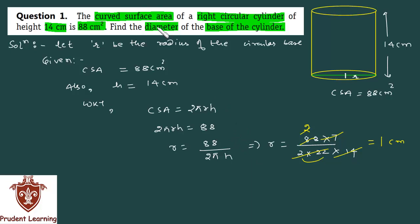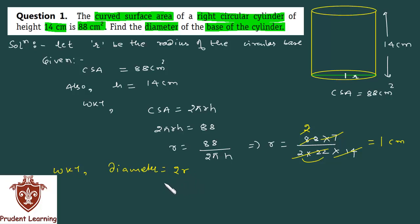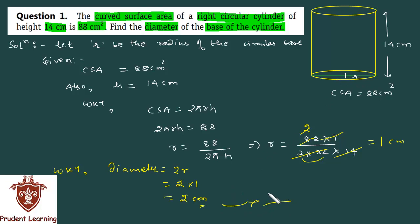But what we need to find is the diameter. We know that diameter is equal to twice the radius. The radius we found is 1 cm. So, 2 into 1 is 2 centimeters. Hence, the diameter of the circular base is 2 centimeters. This completes our solution.